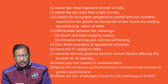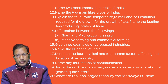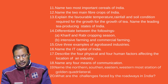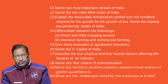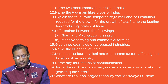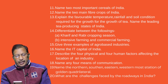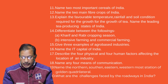Name the two most important cereals of India. Name the two main fiber crops of India. Explain the temperature, rainfall, and soil conditions required for the growth of tea. Name the leading tea-producing states of India. Differentiate between the kharif and rabi cropping seasons, and between intensive farming and commercial farming.